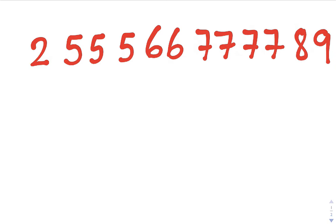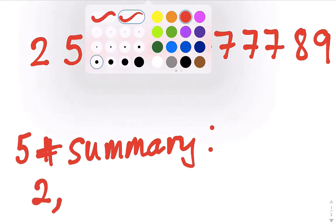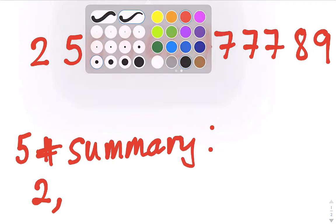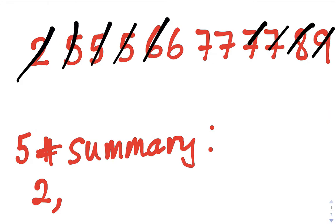So first, five number summary. We know that our min is two, and then we're going to look for Q1, the median, and Q3. So I'm going to do this by crossing off. First, let's find the median. If I cross off until we find the middle, the middle is between six and seven, and you should know that the middle of six and seven is 6.5.